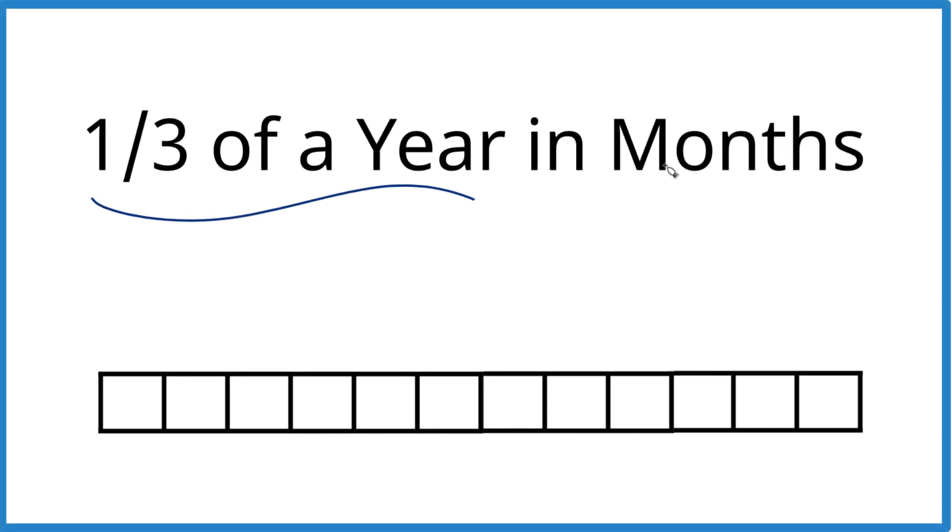So what is one third of a year in months? How do you figure that out? A good way to think about it is a year has 12 months. We have 12 blocks here. Each block is one month.